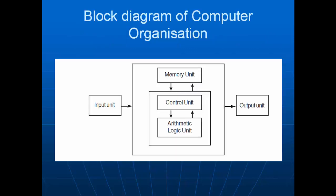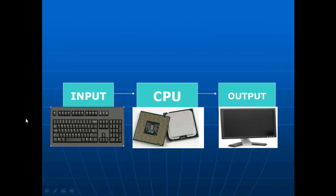Looking at the block diagram of computer organization: the user gives input data to the processor. Inside the CPU we have the memory unit, control unit, and arithmetic and logic unit. The processor processes the input data and finally produces the output result. For example, the keyboard is an input device — you type something, it sends the data to the CPU, which processes it, and finally sends it to the output device. For example, if you type ABCD on the keyboard, it is displayed on the monitor.